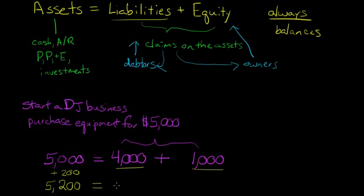But, that has to equal the right hand side. If the left hand side goes up by $200, then the right hand side must go up by $200. So, then we say, how was that increase in assets financed?